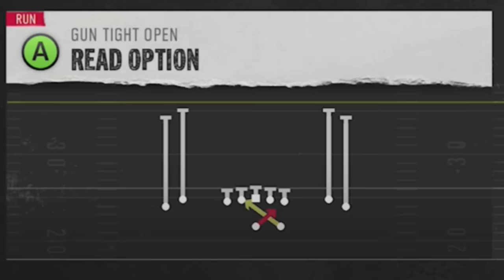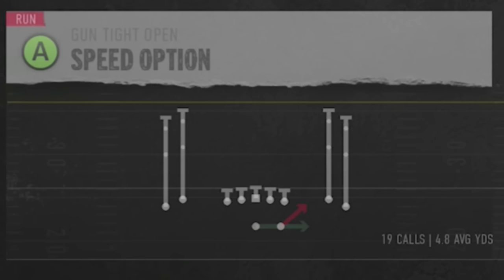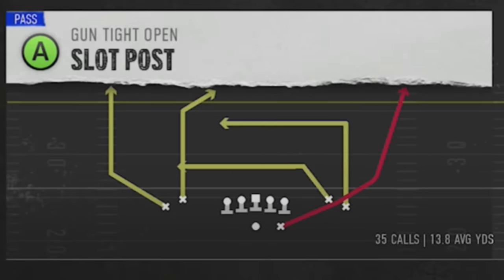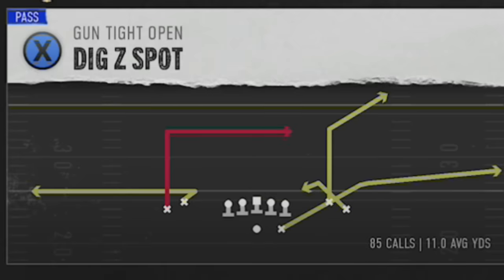For my five-play audibles, I typically use the read option as my inside run because I don't have an inside zone, but this can work very well as a replacement. I also use the speed option as my outside run, as this is one of the most explosive runs in the entire formation. For passing plays, I keep the slot post because this is a one-play touchdown against every single defense. I use the mesh spot because those drags get open against just about every defense, and my fifth play is typically the dig Z spot — probably my favorite.